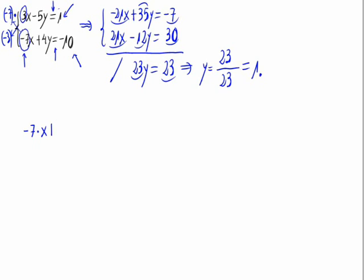We would have from the second minus 7 times x which is the value we want to calculate plus 4 times y which gives us 1 equals minus 10. From here minus 7x plus 4 times 1 is plus 4 equals minus 10.